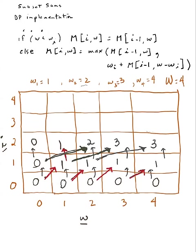This is the choice that was made right here. With items 3, 2, 1, the only possibility is I can't pick any of them. My maximum weight is zero, so I can't pick the three, I can't pick the two, I can't pick the one — I pick nothing. That's where that comes from.